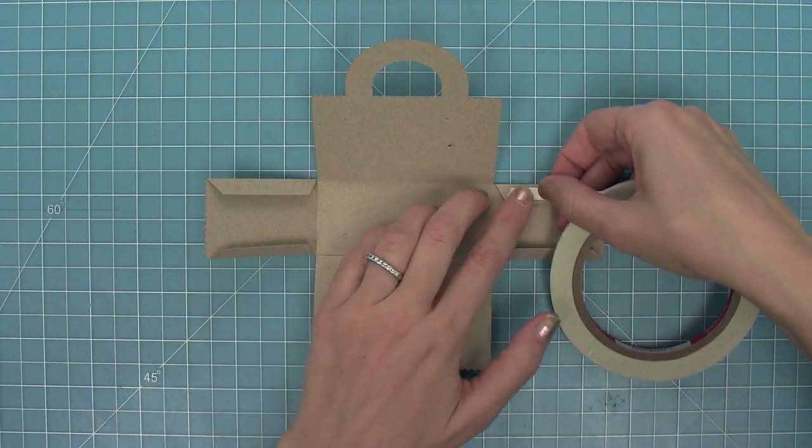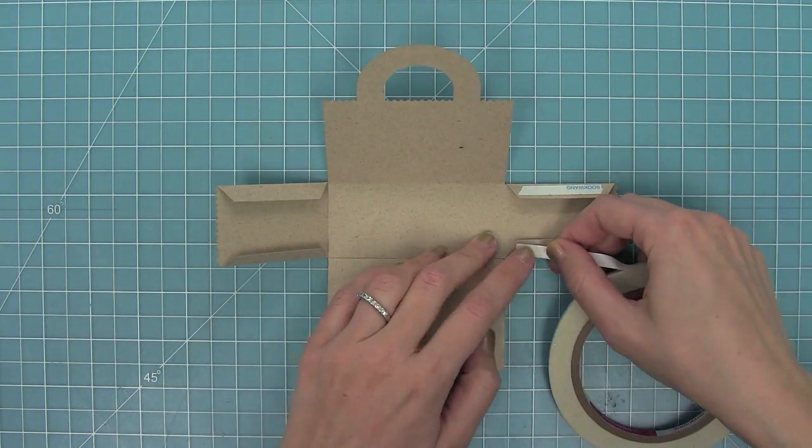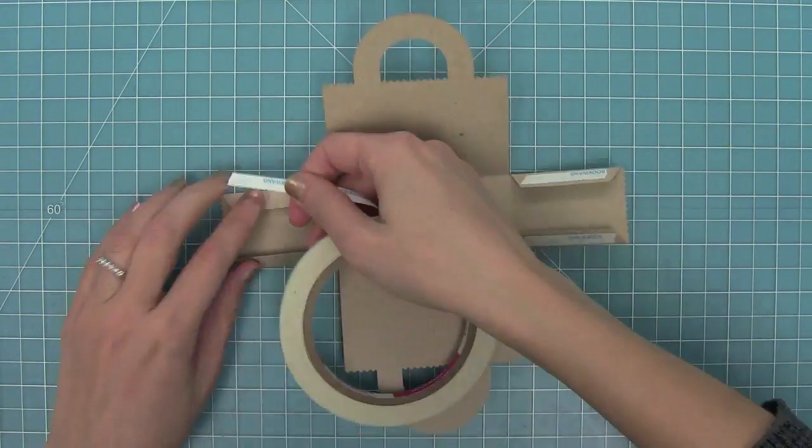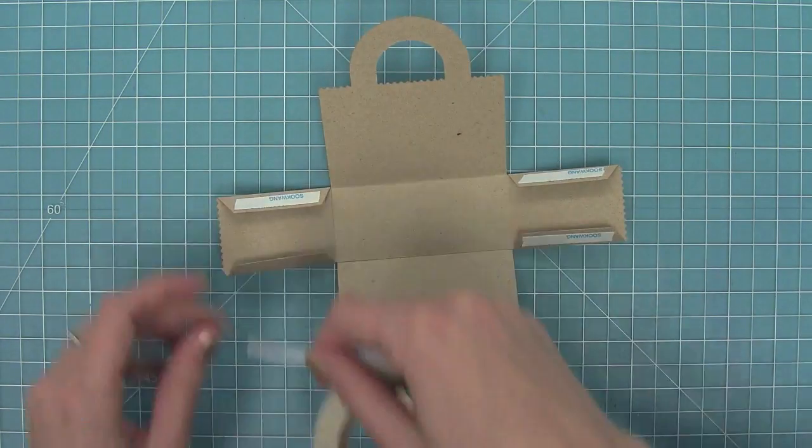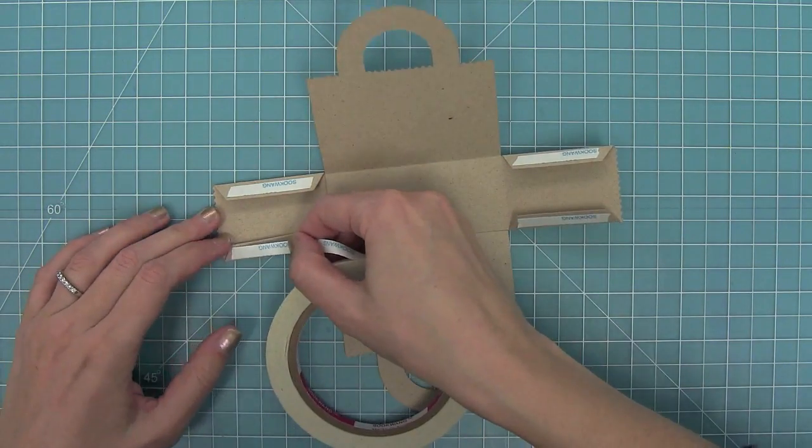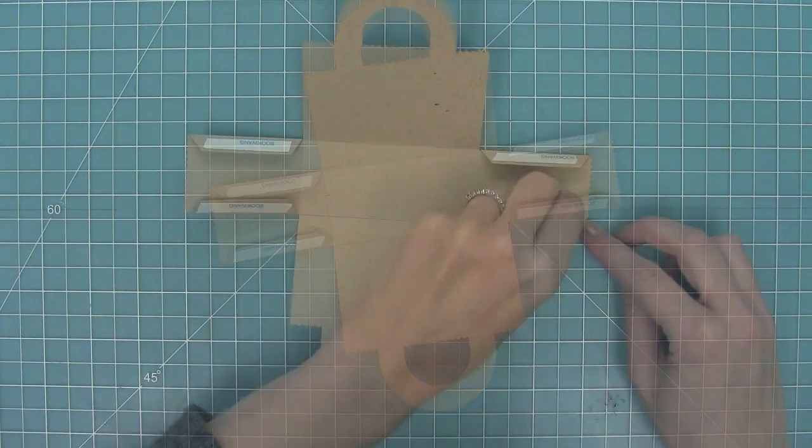Next, it's time to form the bag by adding adhesive to all of those little tabs that we folded earlier. Once again, I love using the score tape because it's nice and strong and it's tearable too, so you can just kind of put it on there and rip it right off and make a lot of tote bags really quickly. Now that I have adhesive on all of these parts, I'm ready to actually form the bag.